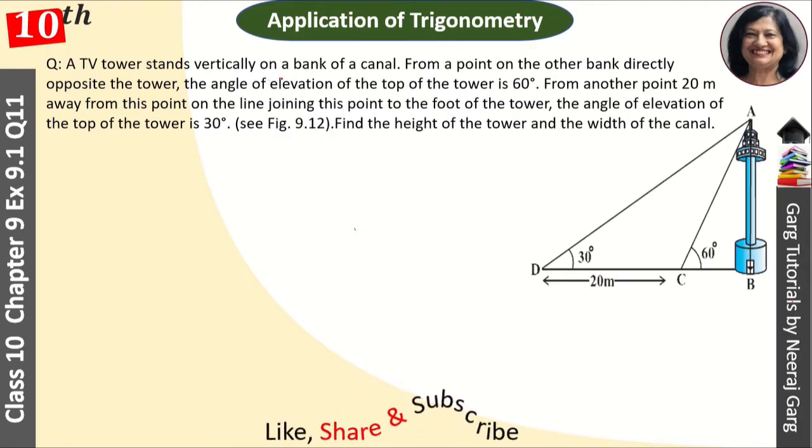A TV tower stands vertically on a bank of a canal. From a point on the other bank directly opposite the tower, the angle of elevation of the top of the tower is 60 degrees. From another point 20 meters away from this point on the line joining this point to the foot of the tower, the angle of elevation of the top of the tower is 30 degrees. Find the height of the tower and width of the canal.